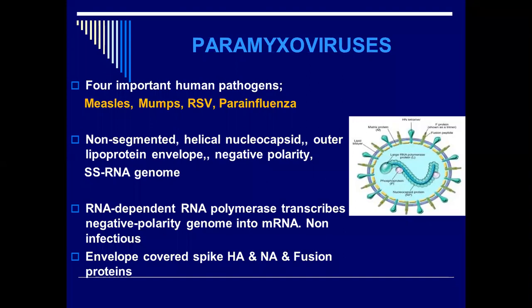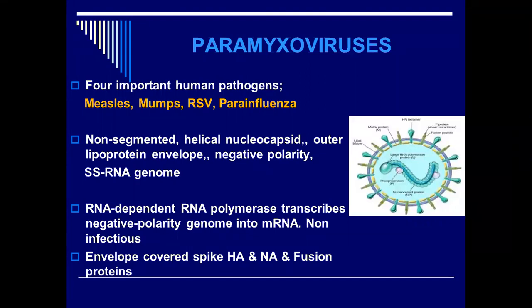These viruses, the paramyxoviruses, they are non-segmented. They have a helical nucleocapsid, meaning the capsomers constitute a helical form. They have an outer lipoprotein envelope. And the RNA is a negative-strand, negative-polarity, single-stranded RNA genome.